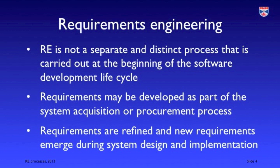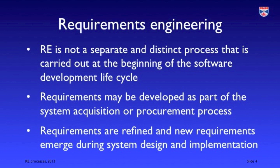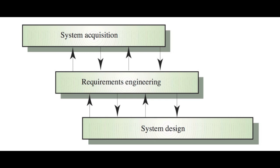We talk about requirements engineering as a separate process and there's an implication that this is something we do as a discrete activity at the beginning of a software system development — but it's really not like that at all. There's a very close relationship between the process of system acquisition and procurement and requirements engineering. We may constantly refine our requirements depending on what we find out about what's available on the market. Nobody builds systems from scratch anymore — we always build on top of existing components and we have to adapt the requirements to reflect what these components can do.